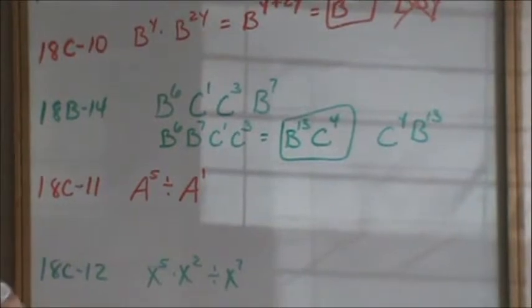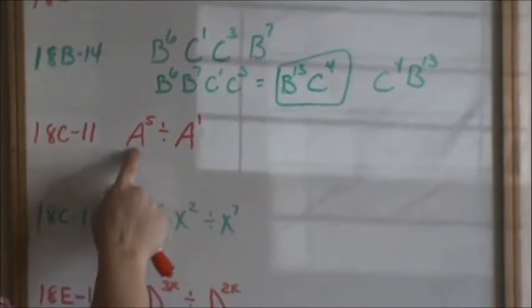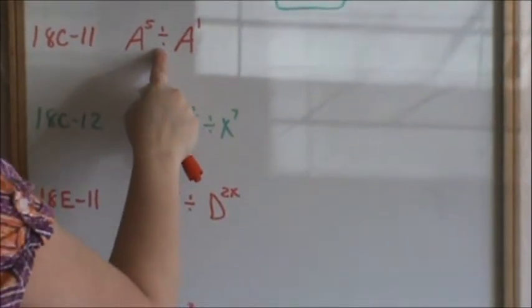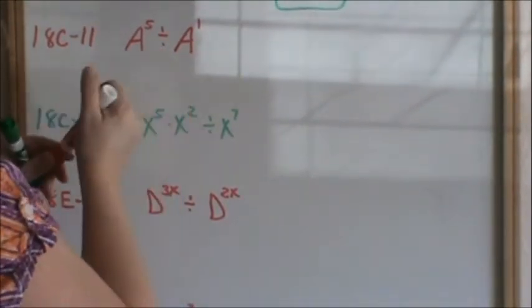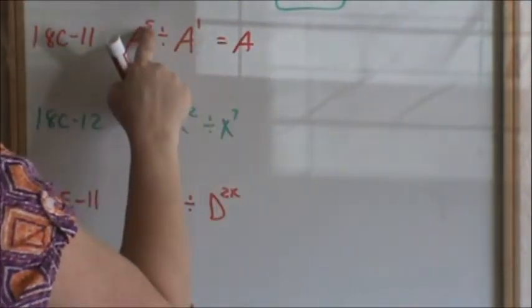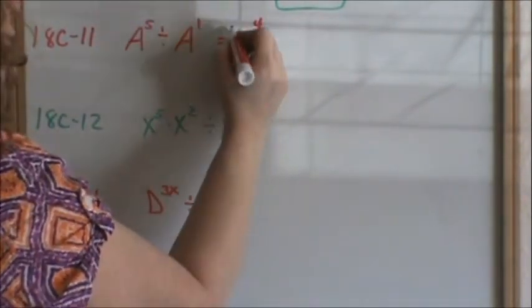Now going to 18c number 11. Our bases are the same, but now we are dividing. When your bases are the same and you're dividing, you now subtract your exponents. So subtracting 5 minus 1 becomes a to the 4th.